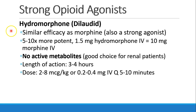Hydromorphone, or Dilaudid, is very similar to morphine — also a strong agonist with similar efficacy, but much more potent, about 5 to 10 times more potent. 1.5 mg of hydromorphone IV equals 10 mg of morphine IV. Hydromorphone has no active metabolites, making it a better choice for renal patients. Its duration of action is 3 to 4 hours, with a dose of 2 to 8 mcg/kg, or about 0.2 to 0.4 mg IV every 5 to 10 minutes.